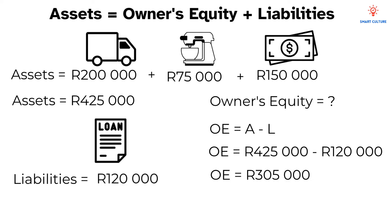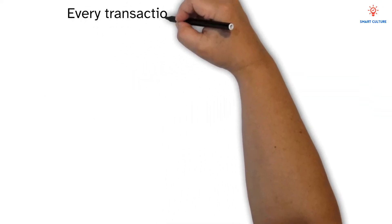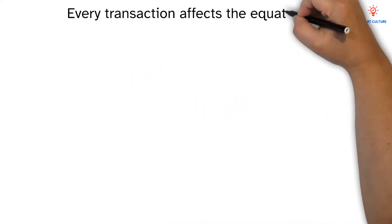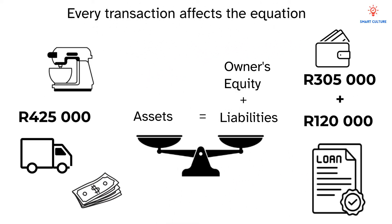Every transaction that takes place in a business affects the accounting equation. For the equation to stay balanced, what happens on one side must also happen on the other.